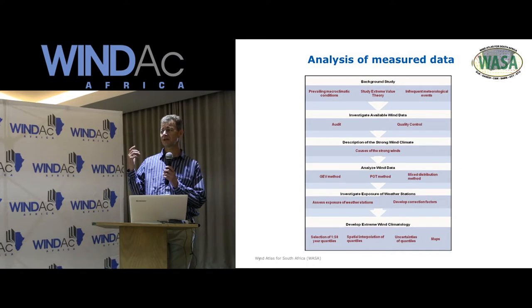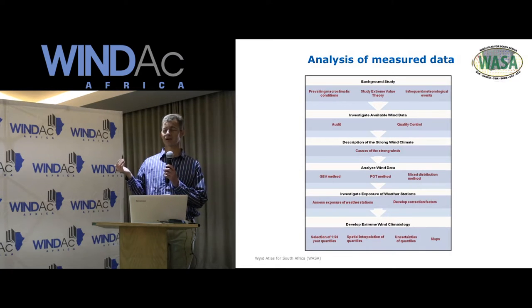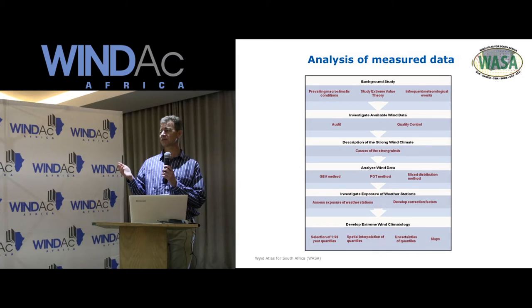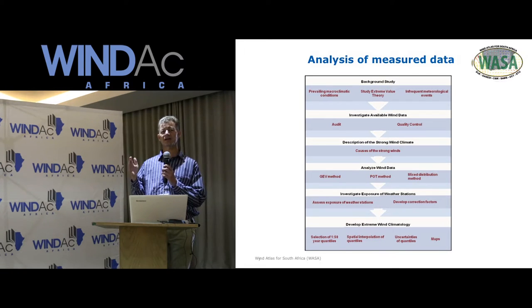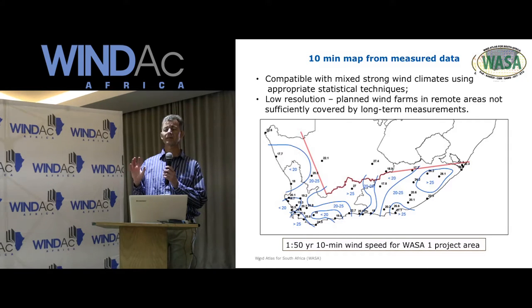We analyzed the wind data using different methods: the ordinary general extreme value method, the peak over threshold method, and a mixed distribution method that takes into account the mixed strong wind climate. Very important is the investigation of the exposure of the weather stations — we assessed exposure, developed correction factors, and eventually developed our extreme wind climate maps. The WASA-1 10-minute map from measured data uses values compatible with the mixed strong wind climates, using appropriate techniques.